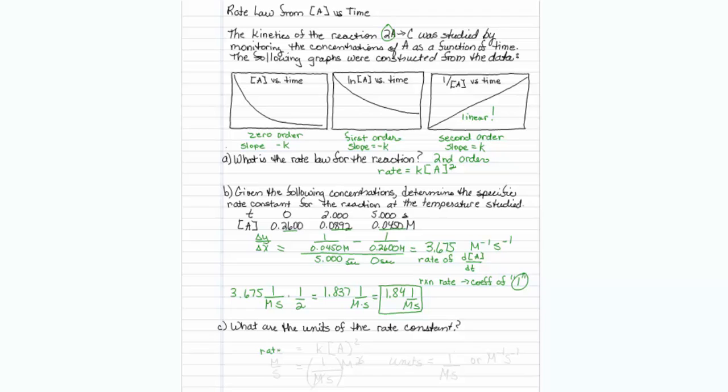The rate of any reaction is equal to, in this case, K, and since we are dealing with a second order, it would be concentration of A squared. The units of a rate are always in molar per second. A is going to be in molar, and it's squared. So the question really is asking us, what goes in the parentheses?